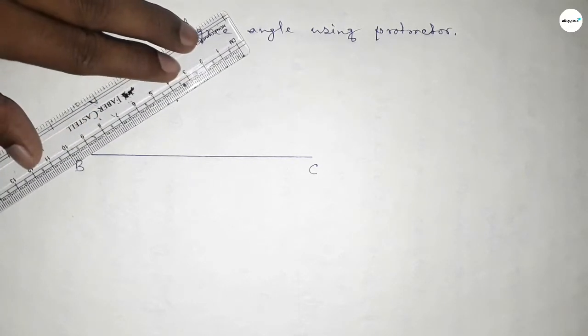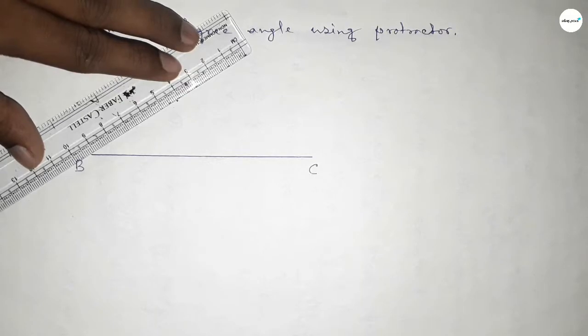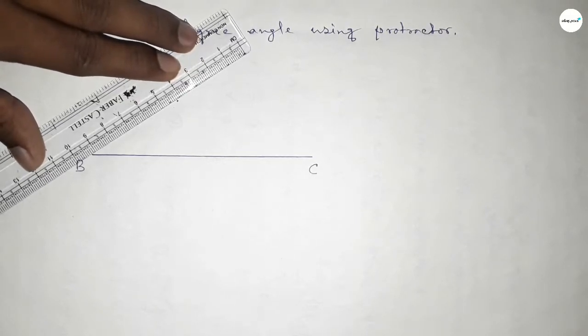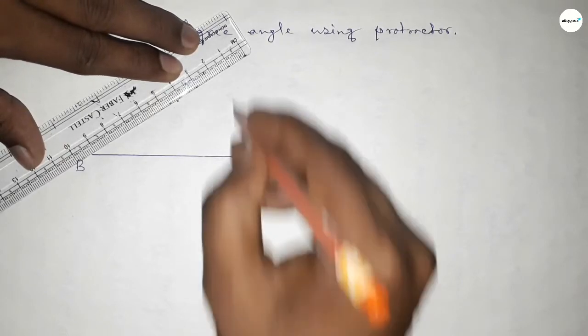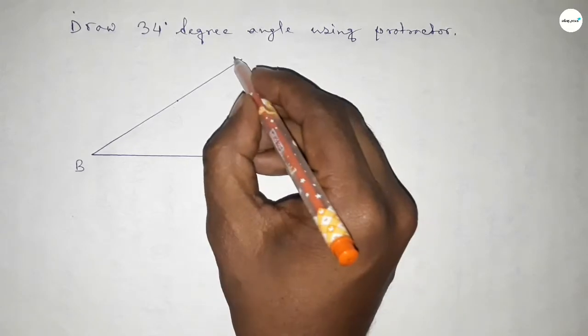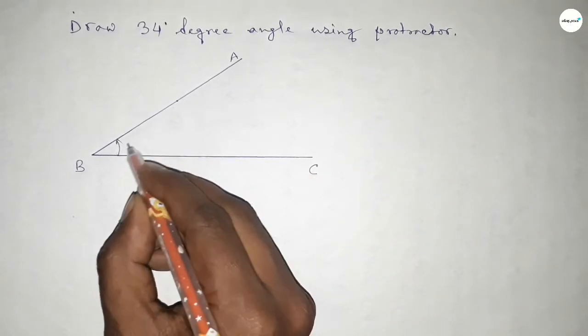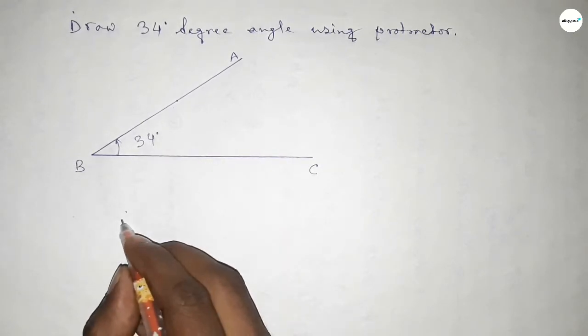Now joining this side to get the 34-degree angle. So joining this one, so by joining this we got a 34-degree angle. So here A point and angle ABC, this is a 34-degree angle.